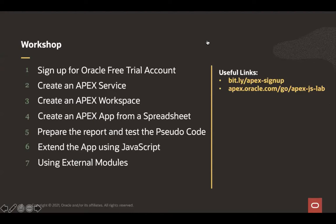The workshop steps are: sign up for Oracle free trial account, create an Apex service, create an Apex workspace, create an Apex application from a spreadsheet, prepare a report and test pseudocode, extend the application using JavaScript, and use external modules. There are two useful links for today's workshop — the sign-up link and the workshop lab guide. Please reach out in the Q&A channel if you need them.